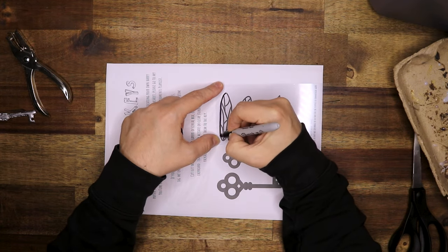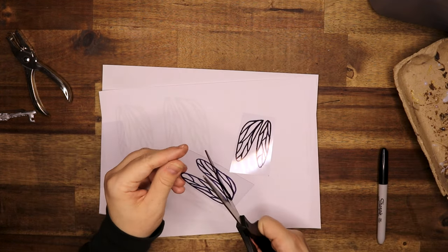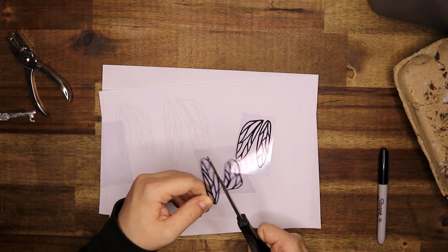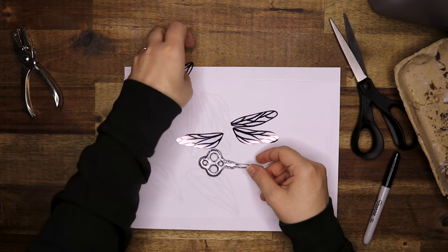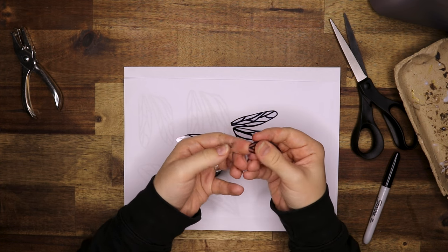Then with a Sharpie I am going to trace around the wings, and I'm using the acetate for this. After tracing around the wings and putting the pattern in, I'm going to cut them out and then I'm going to glue them onto the key. It's that simple.